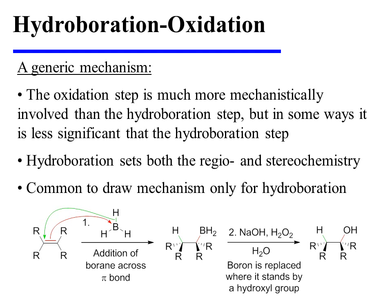The oxidation step is much more mechanistically involved than the hydroboration step, but in some ways it is actually less significant, because during hydroboration the regio- and stereochemistry are set. So it is common to draw the mechanism only for the hydroboration step, in which the alkene pi bond attacks the electrophilic boron, and simultaneously the sigma bond to hydrogen migrates onto the carbon of the alkene that would otherwise have lost a bond.